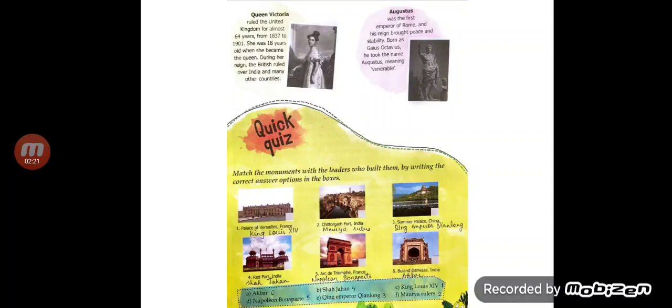Next is Queen Victoria. She ruled the United Kingdom for almost 64 years, from 1837 to 1901. She was 18 years old when she became the queen. During her reign, the British ruled over India and many other countries.